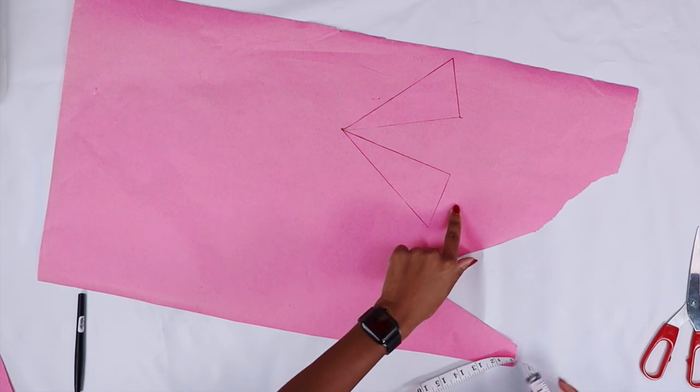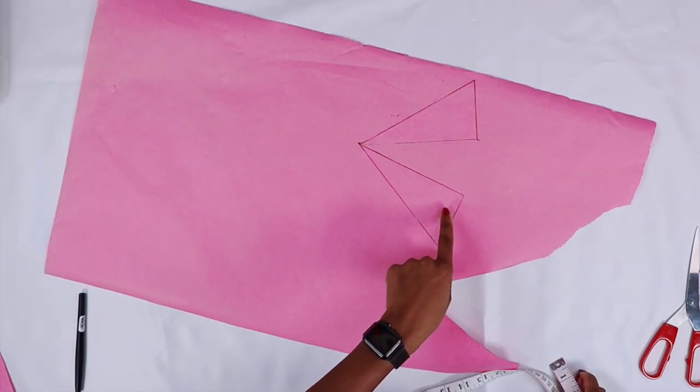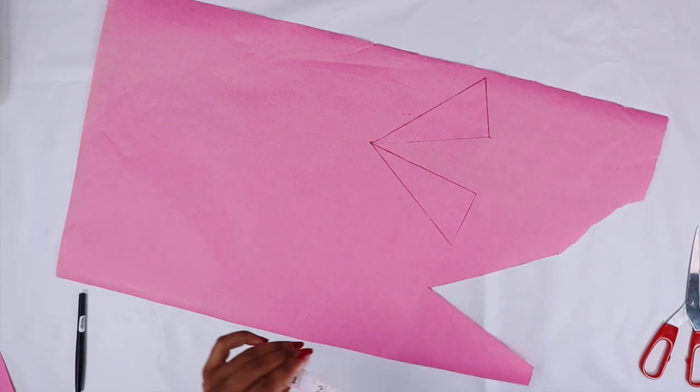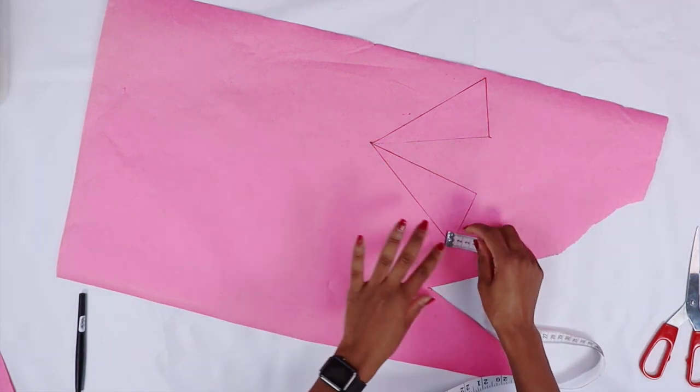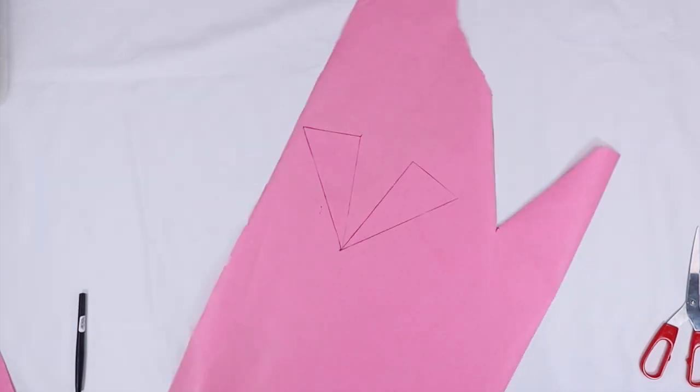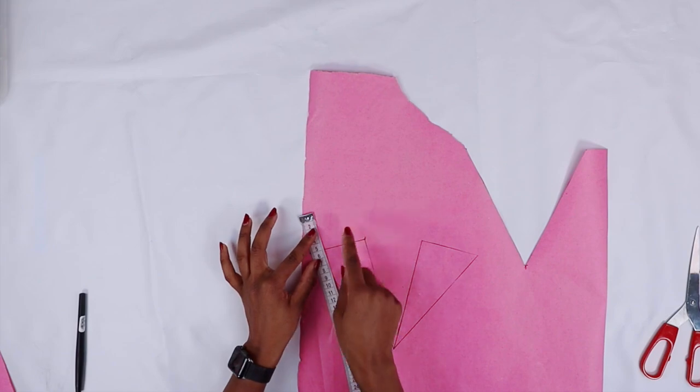Next I'm going to add between three to five centimeters down at the bottom, so I'm going to add five centimeters for mine. Basically I'm just going to go around.